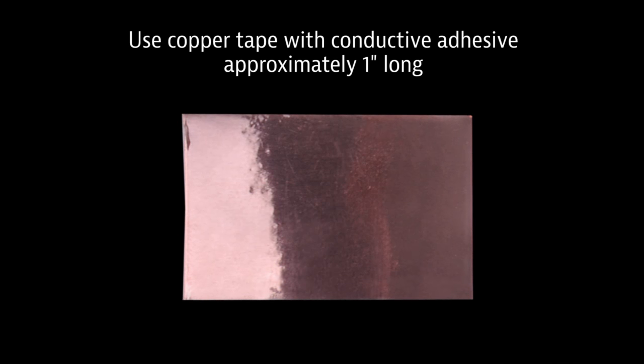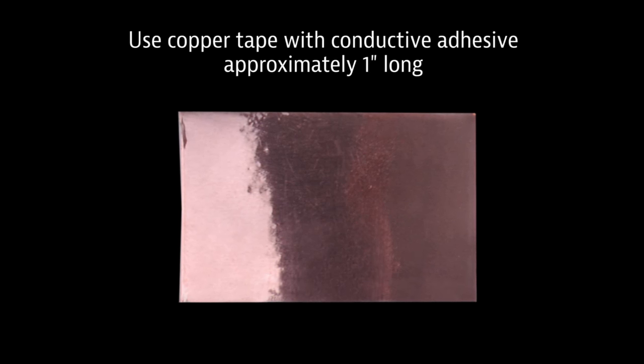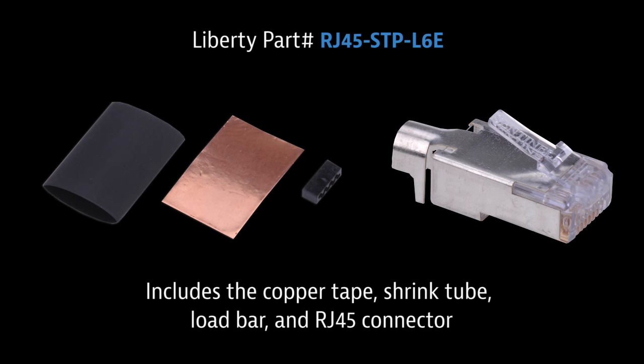For the best practices application, you want to secure your drain wire with copper tape. You don't want to use just any copper tape - you want to use copper tape that has a conductive adhesive. Liberty part number RJ45-STP-L6 provides you with everything you need for this termination.